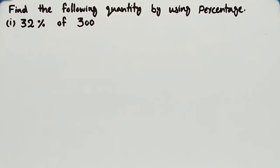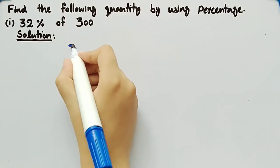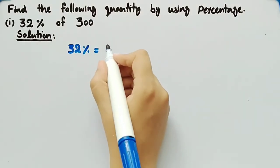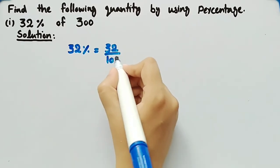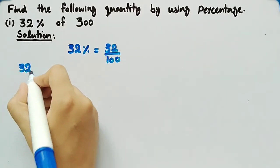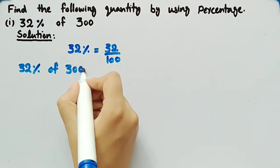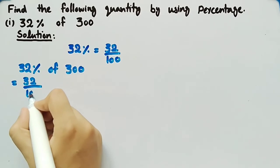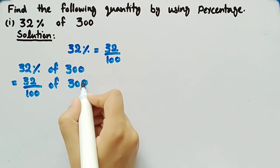In this video we will find 32 percent of 300. We know that 32 percent can also be written as 32 divided by 100, so we can write 32 percent of 300 as 32 by 100 of 300.